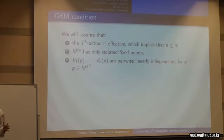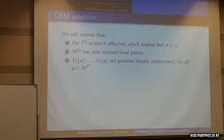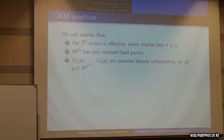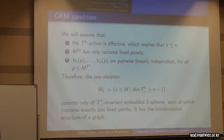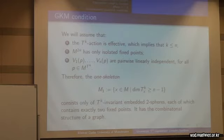Now we're going to slightly restrict the manifolds we're looking at so we can use GKM theory to tell us something about their bordism. We assume the action is effective, the manifold has only isolated fixed points, and then the GKM condition: that these integral weight vectors from the tangential representation are pairwise linearly independent. The reason we want this condition is so that we can say the one-skeleton of our manifold consists of equivariantly embedded two-spheres with exactly two fixed points, as heard in Shintaro's talk yesterday. If we quotient the one-skeleton by the torus, we get the structure of a graph.